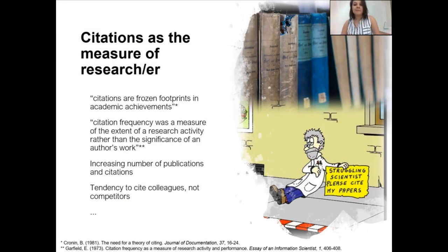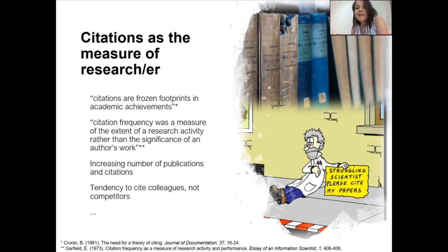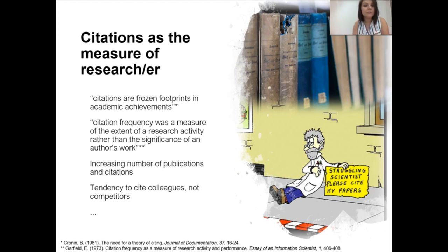First we need to understand what citations are and what they are used for. I like the definition of Cronin — he said that citations are frozen footprints in academic achievements, and one can easily follow the way of the previous scholar with the help of these footprints. As PhD students, you know that you have to search for literature and cite it. Why? Because they are the ancestors of your idea or your field, so you have to cite them. Science is cumulative, and science is cumulative thanks to citations.